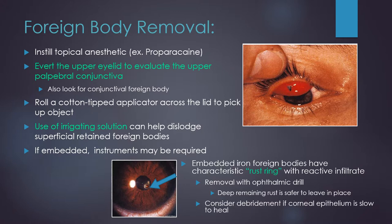Only trained professionals should attempt foreign body removal. It's useful to use a topical anesthetic such as proparacaine. Make sure to also look for conjunctival foreign bodies, and if you find one, use a cotton-tipped applicator to pick it up. For superficially retained foreign bodies, you can use an irrigating solution to dislodge them. However, if the foreign body is embedded more deeply, it may require instruments for removal. Pictured here is the characteristic rust ring that occurs with embedded iron foreign bodies — these can be removed with an ophthalmic drill. However, if the rust is deep, sometimes it's safer to leave it in place. You can consider debridement if the epithelium is slow to heal.